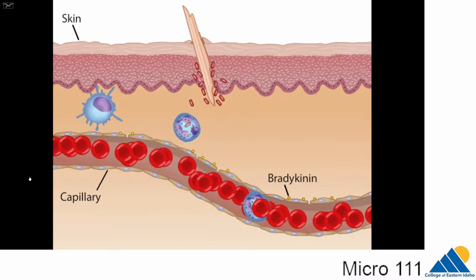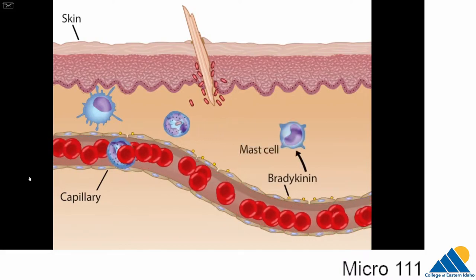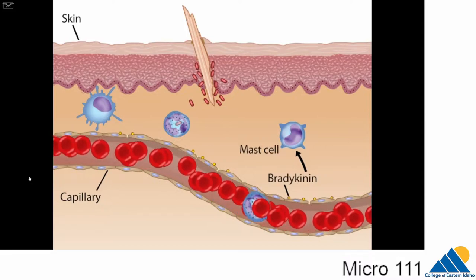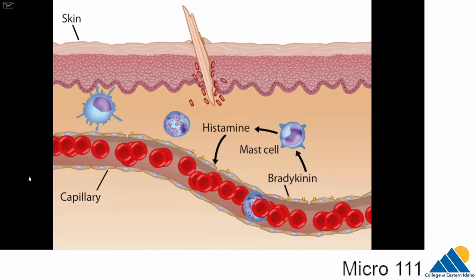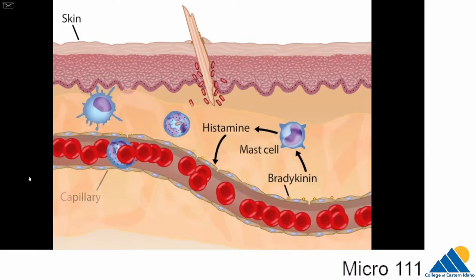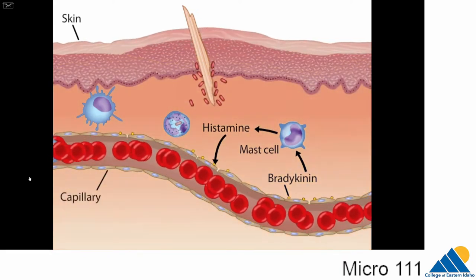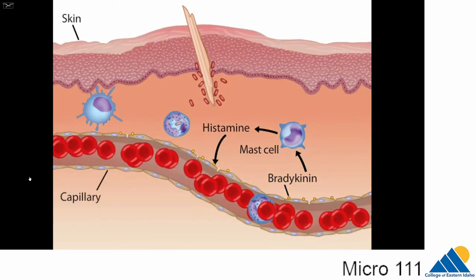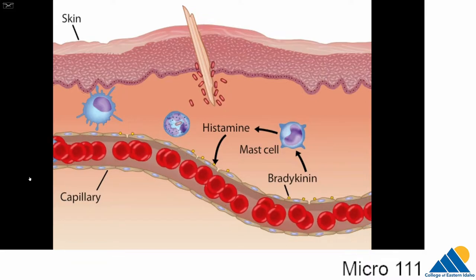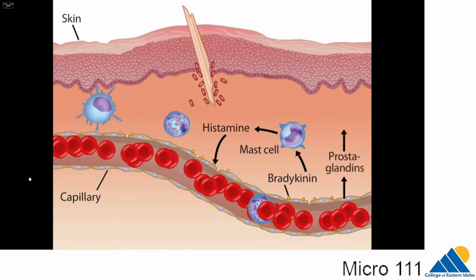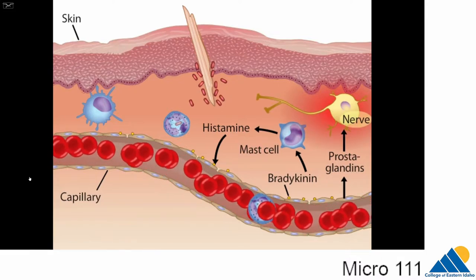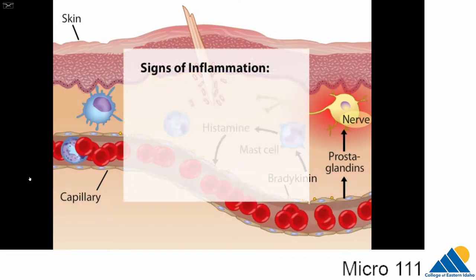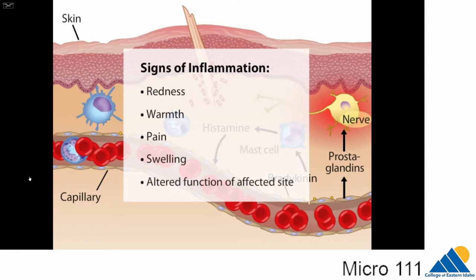Bradykinin molecules also bind to other cells of the immune system called mast cells, causing them to release histamine. The histamine further loosens the endothelial cell junctions, allowing more fluid and cells to move out of the capillaries. Bradykinin, when it attaches to capillary cells, induces the cells to synthesize prostaglandins. Prostaglandins stimulate nerve endings, causing pain which draws awareness to the infected area. The five cardinal signs of inflammation are redness, warmth, pain, swelling, and altered function at the affected site.